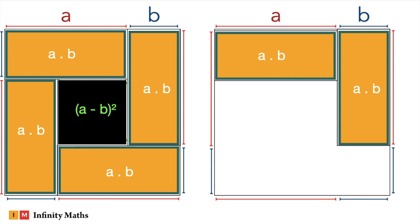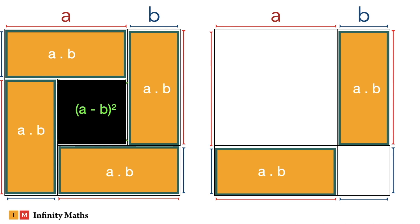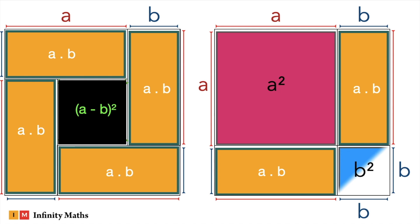Now if you notice, on the left corner you have got a square of side a, so you can say the area it possesses is a squared. And if you notice on the right bottom corner, you have got a square of side b, so you can say the area it has is b squared.